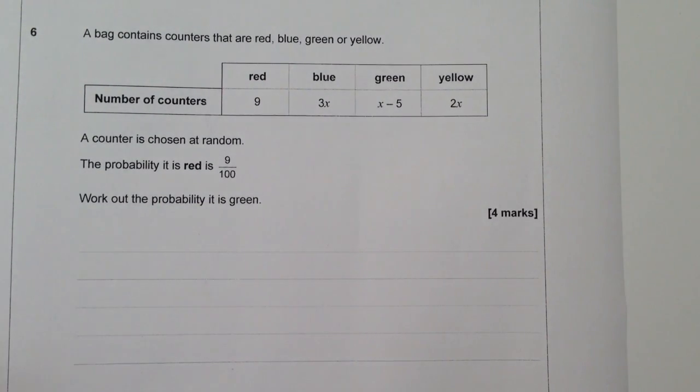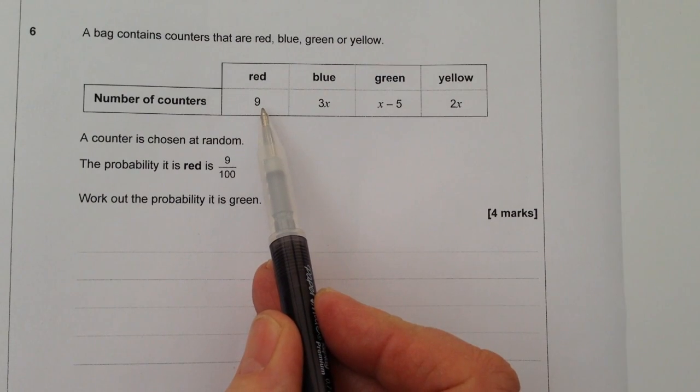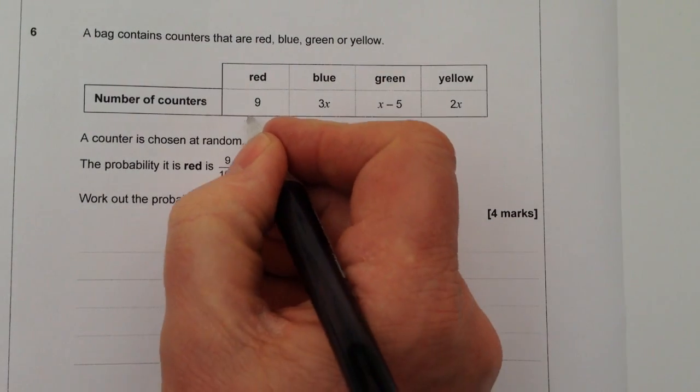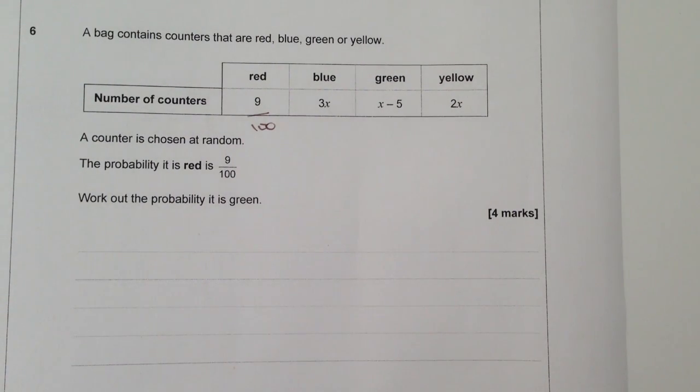The main thing here is that we're asked to work out the probability of a bag of counters being green. The information we're given is that the probability of red is 9 over 100, which means 9 out of 100. So what we're really saying is that the red counters have a probability of 9 out of 100, which means there's 100 counters in the whole bag.